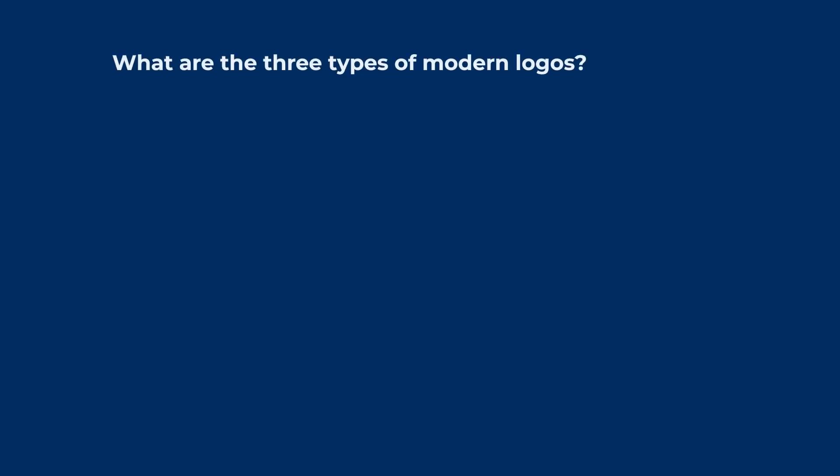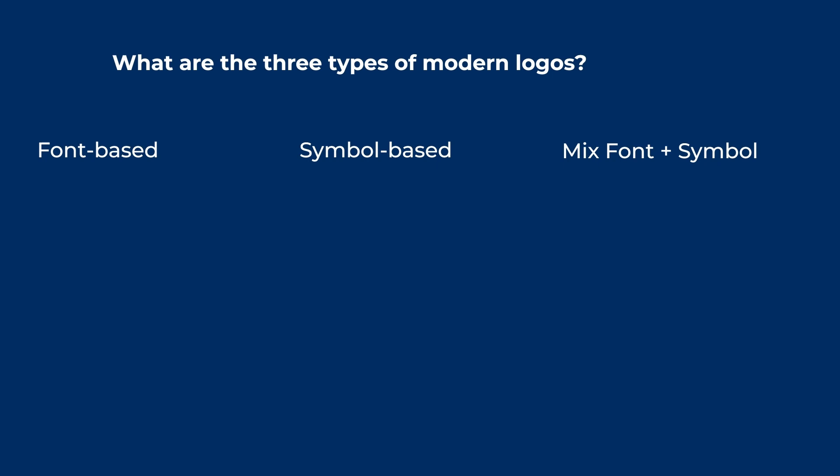So what are the three types of modern logos? The first type is the font-based logo, the second type is the symbol-based logo, and the third type is a mix of the two. In general, most logos you see will fall into one of those three categories, and in this video I will show you how to create each one using Canva.